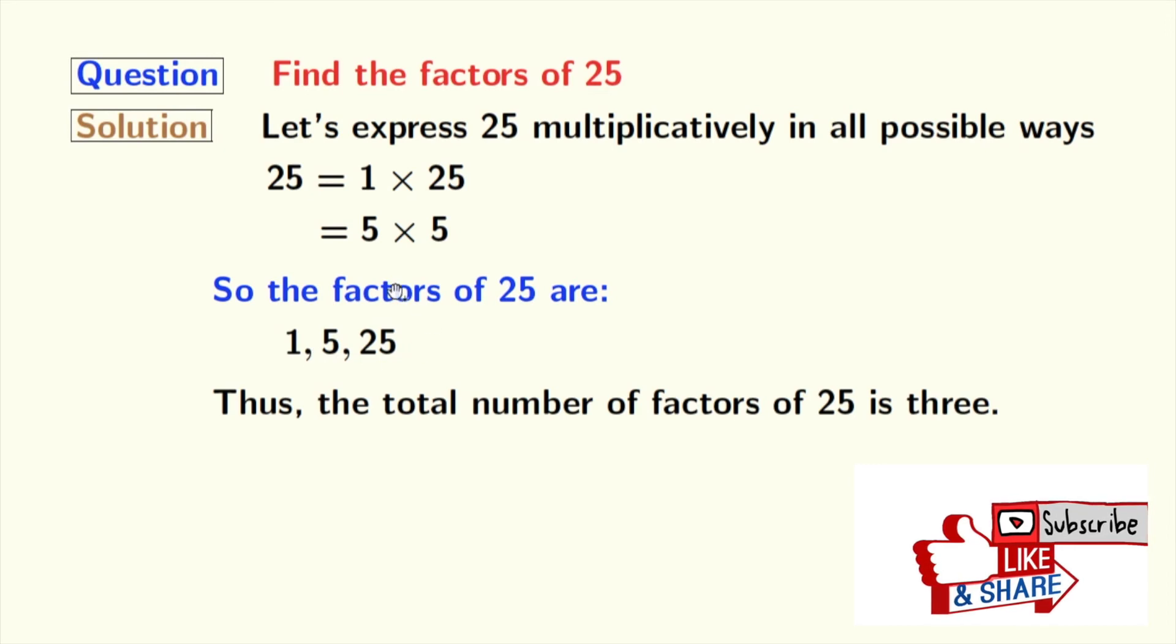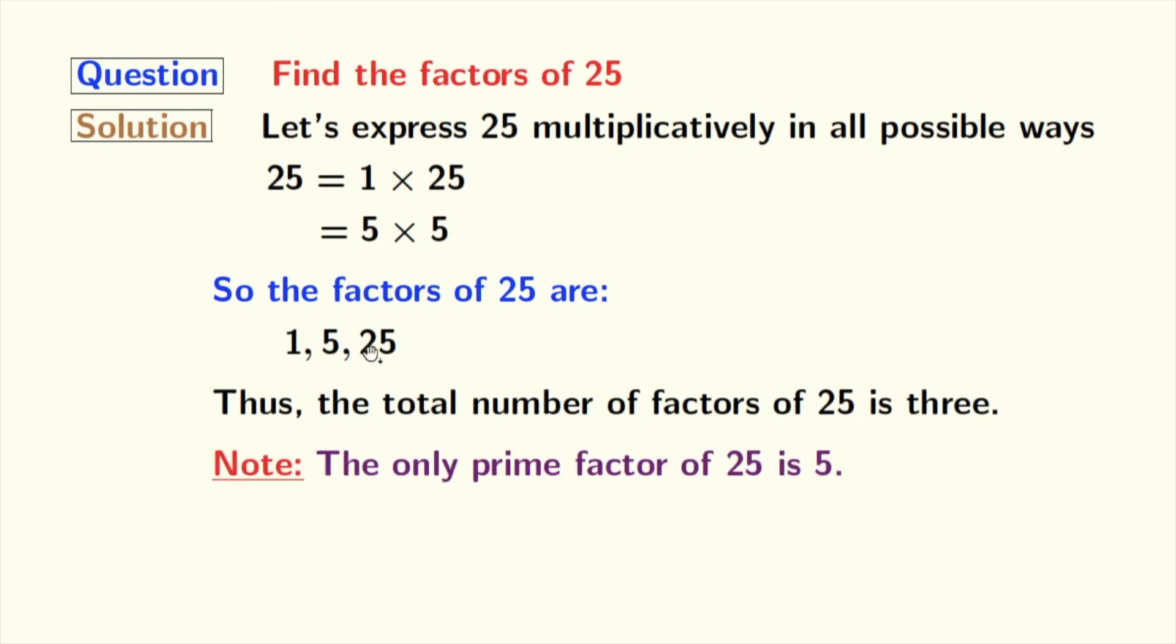Now, if we look at these factors, we can see that 5 among these numbers is a prime number because this number does not have any divisor other than 1 and that number itself. So, we can say that the prime factor of 25 is 5.